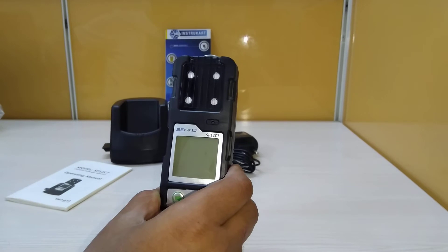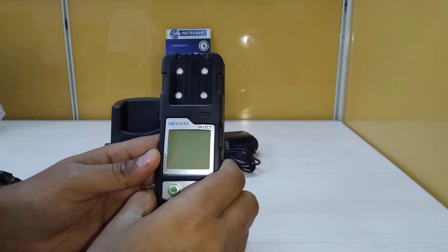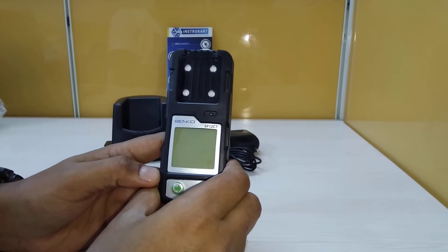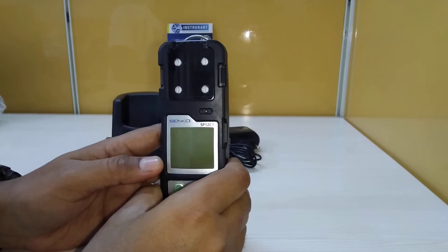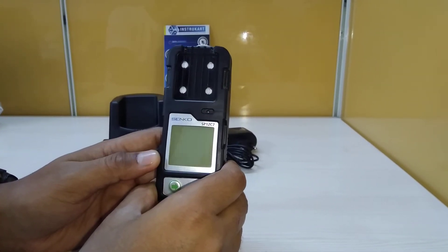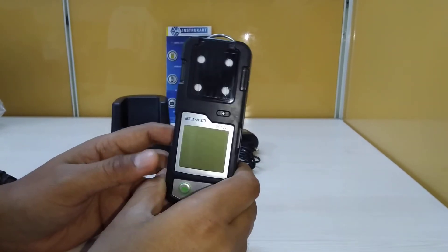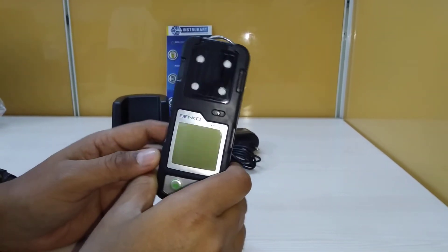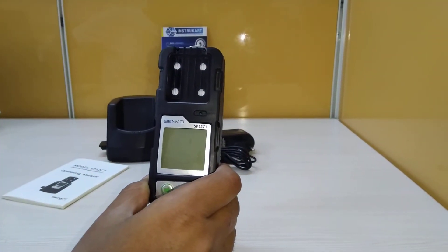The resolution is 0.1 percent for oxygen and one percent for LEL, carbon monoxide, and H2S. The flow rate for external pump is 0.5 liters per minute. The alarms are programmable within the detection range.